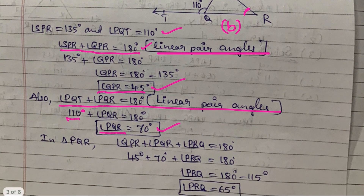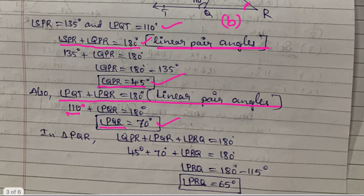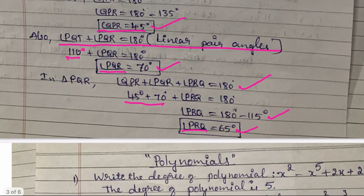Using the sum of those two angles: 45 plus 70 equals 115 degrees. Then angle PRQ equals 180 minus 115 equals 65 degrees. We can find the answer very quickly like this.